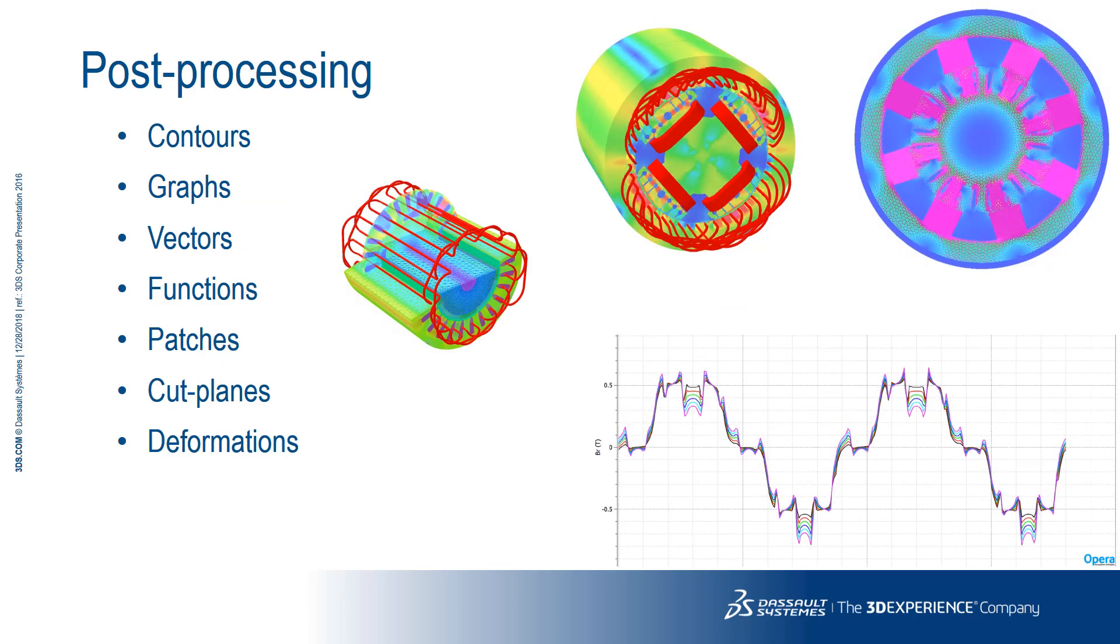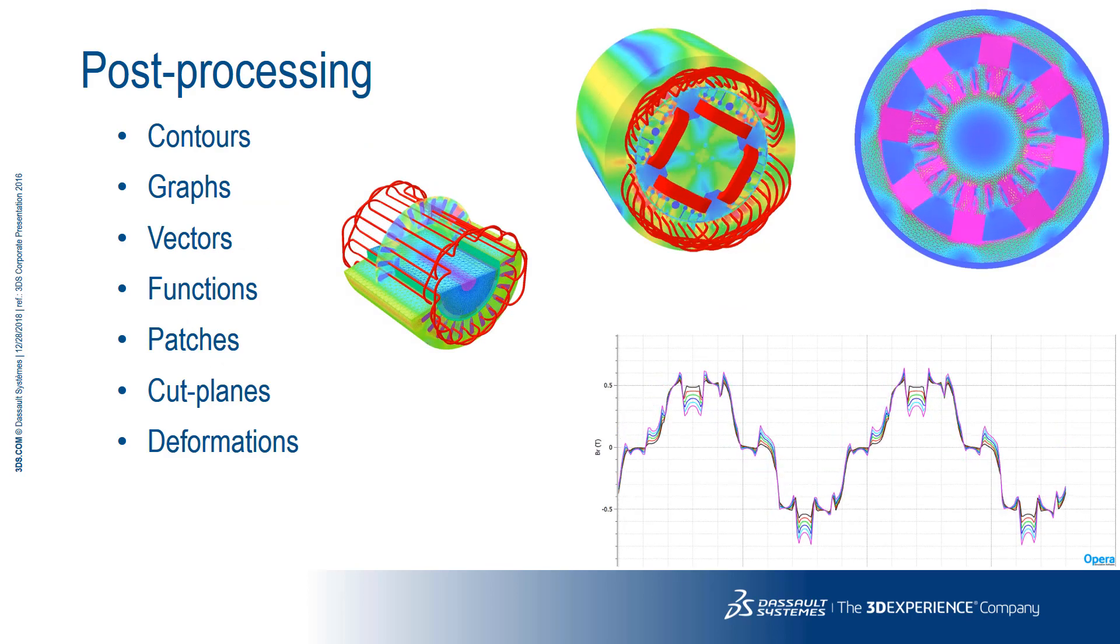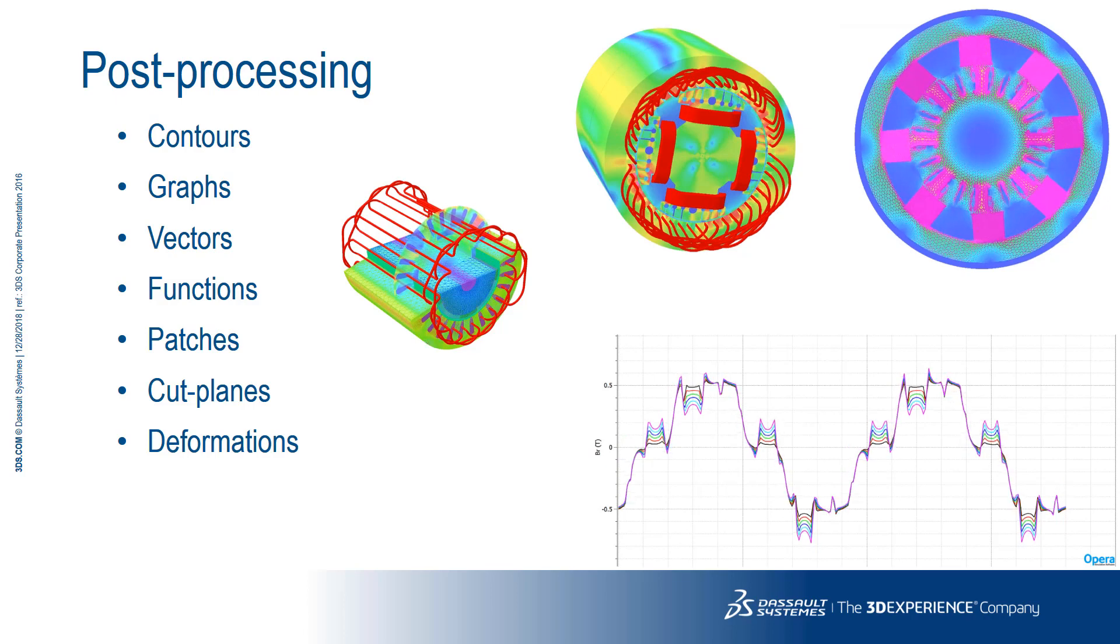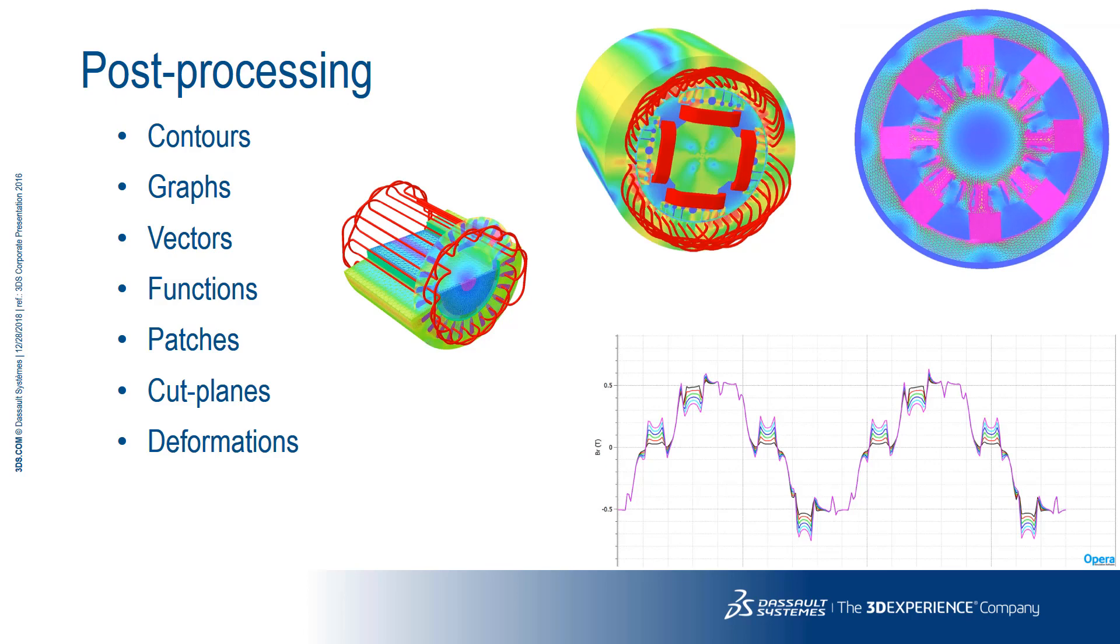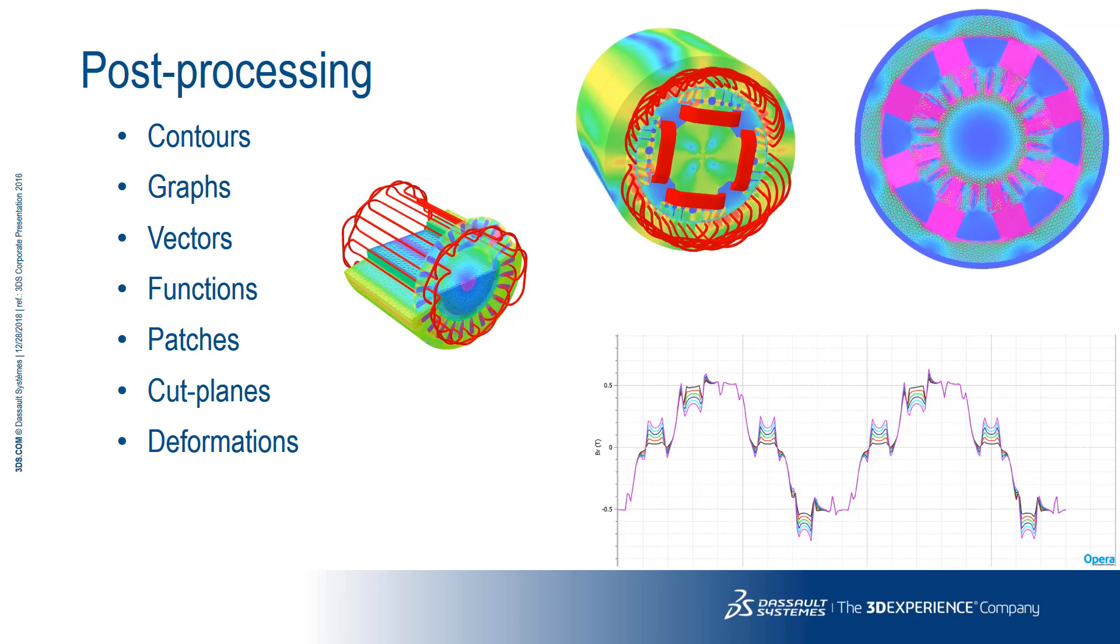Opera's post-processor offers the user all of the functionality necessary to make informed design decisions from interrogation of the results database. It offers, amongst other things, contours, graphs, vectors, patches, cut planes, and deformed shapes.